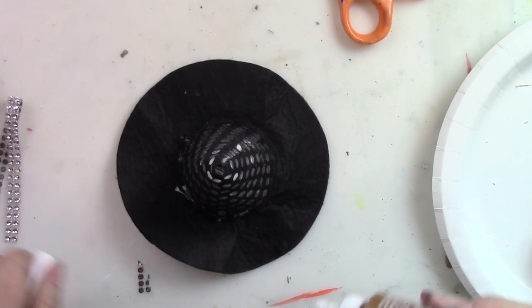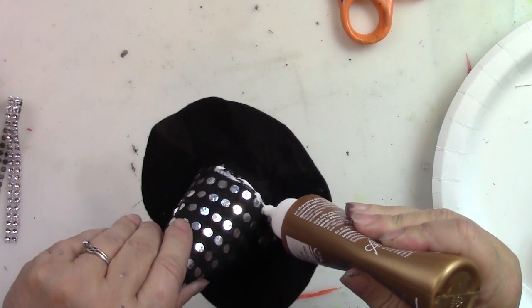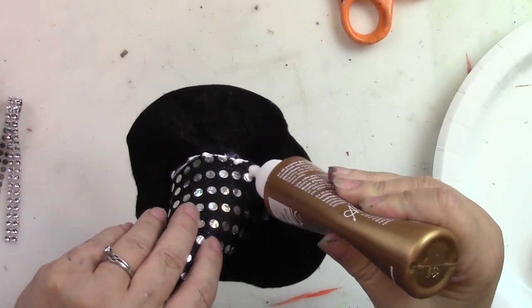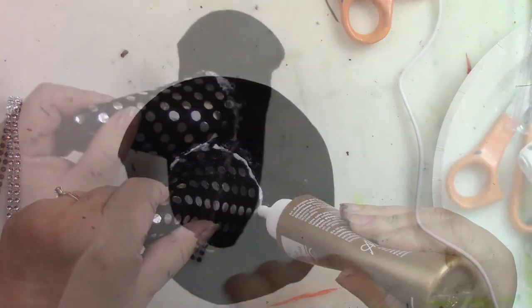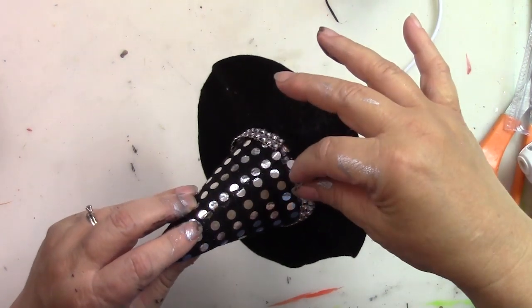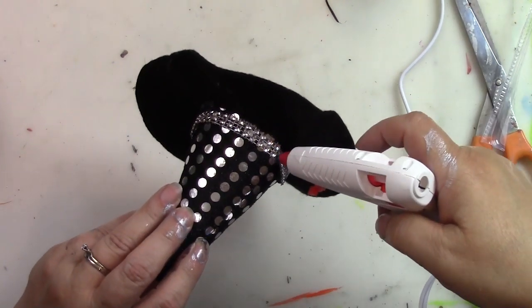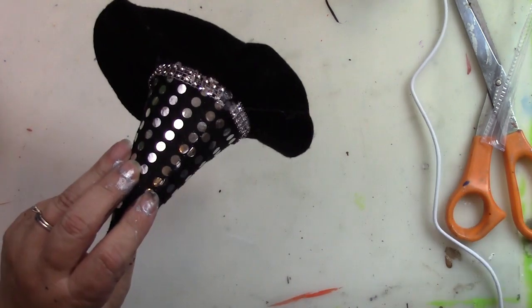So now I'm going to take and put some tacky glue going all the way around. And then I will spot glue. I will use hot glue to spot glue it into place. So I'm going to wrap this around on top of the tacky glue. And then I'll just put a little bit of the hot glue to secure it into position.